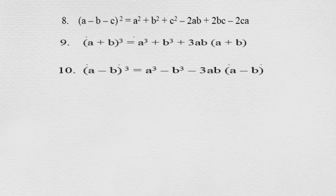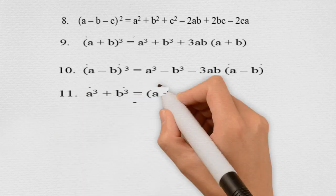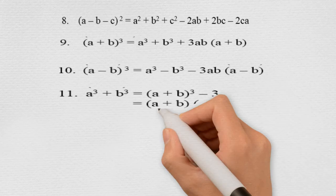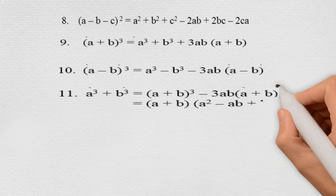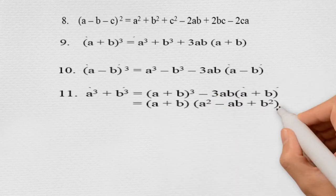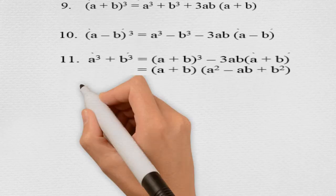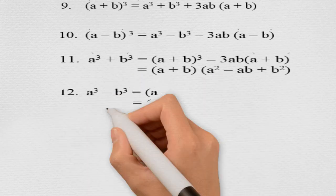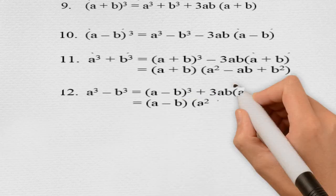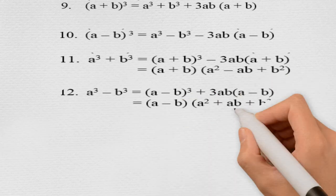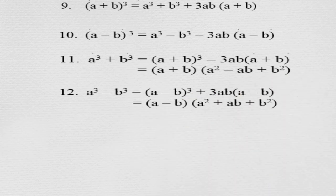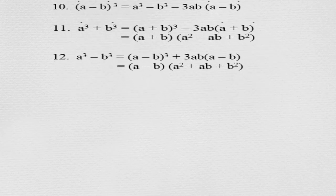The eleventh identity is a cube plus b cube, which is equal to (a + b) whole cube minus 3ab into (a + b), and also equal to (a + b) into (a square minus ab plus b square). The twelfth identity is a cube minus b cube, which is equal to (a − b) whole cube plus 3ab into (a − b), and also equal to (a − b) into (a square plus ab plus b square).